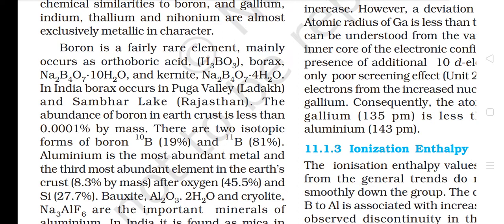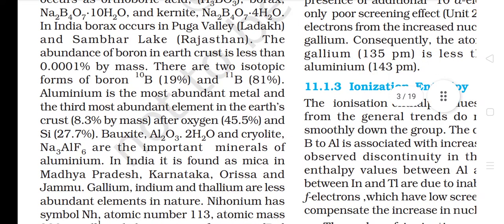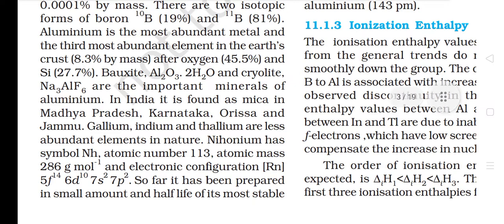In India, borax occurs in Puga Valley, Ladakh and Sambar Lake, Rajasthan. The abundance of boron in the earth's crust is less than 0.0001% by mass. There are two isotopic forms of boron: B-10 (19%) and B-11 (81%). Aluminium is the most abundant metal and the third most abundant element in the earth's crust at 8.3% by mass, after oxygen (45.5%) and silicon (27.7%). Bauxite and cryolite are the important minerals of aluminum.